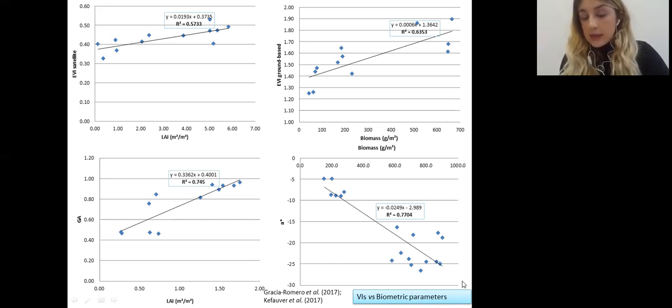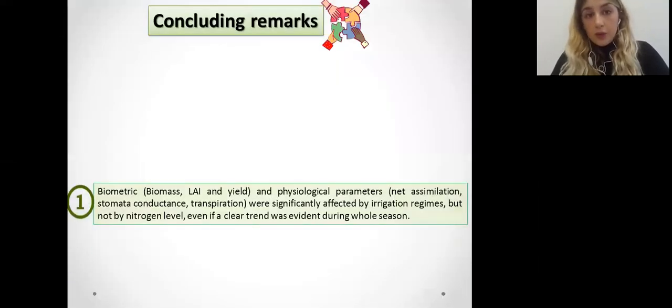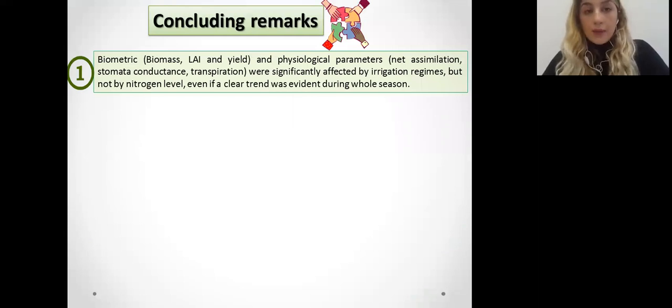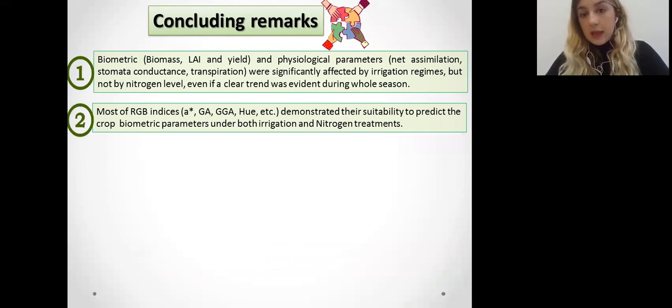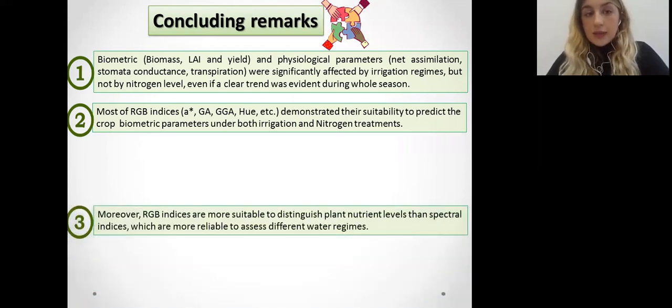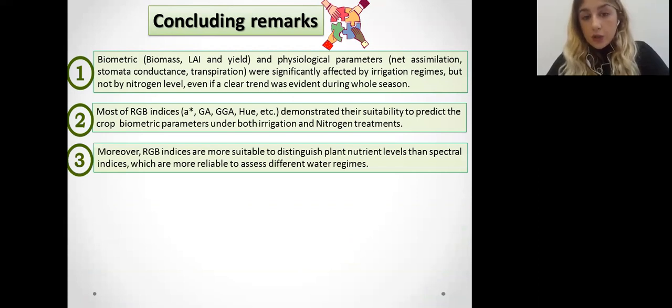What we can conclude from our work is that biometric and physiological parameter were significantly affected by irrigation regimes but not by nitrogen level. Most RGB indices demonstrated the suitability to predict the crop biometric parameters under irrigation nitrogen treatment. Also RGB indices were more suitable to distinguish plant nutrient levels than spectral indices which are more reliable to assess different water regimes.